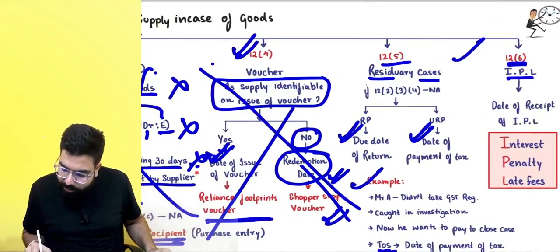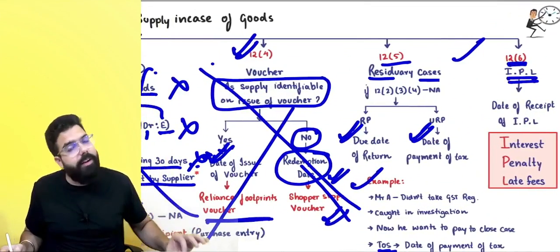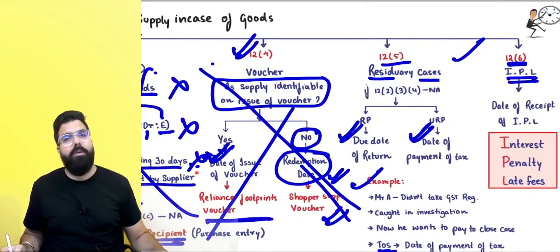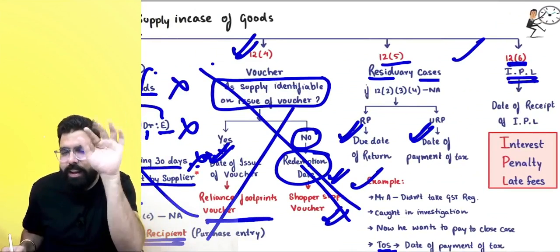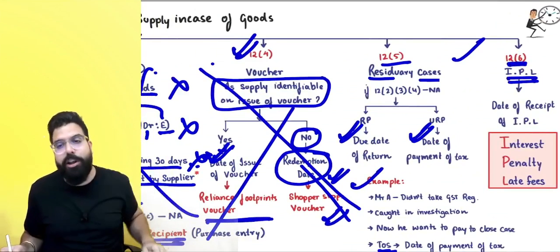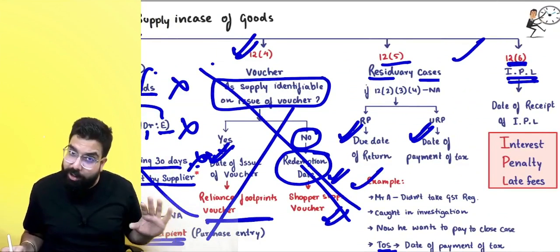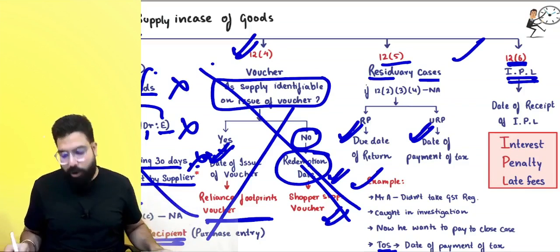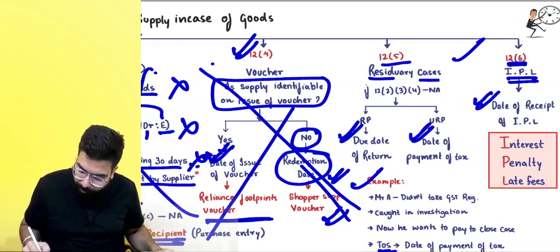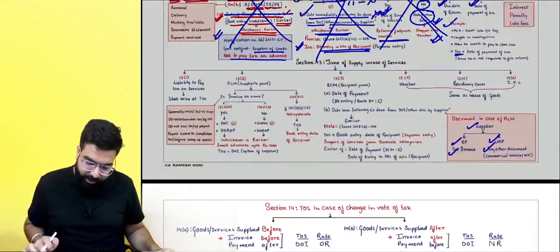Section 12.6 talks about interest, penalty, and late fee. What is the time of supply in case of interest, penalty, and late fee? The day you receive it — the date of receipt — is your time of supply.